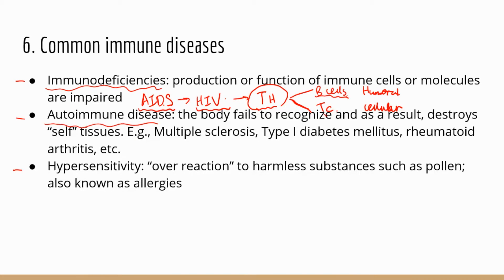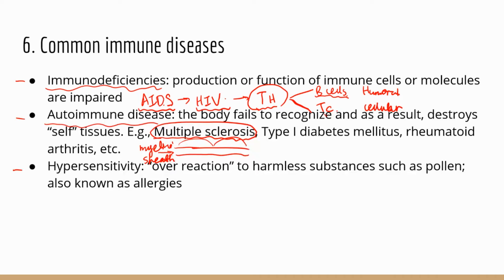Well-known autoimmune diseases include multiple sclerosis. Axons are wrapped by myelin sheaths, which insulate the axons and keep the electrical signal going in the right direction — sometimes the signal can even jump and travel faster. In multiple sclerosis, the body starts to attack and damage the myelin sheath. Without that insulation layer, the electrical signal goes in all kinds of directions, which causes the symptoms of multiple sclerosis.